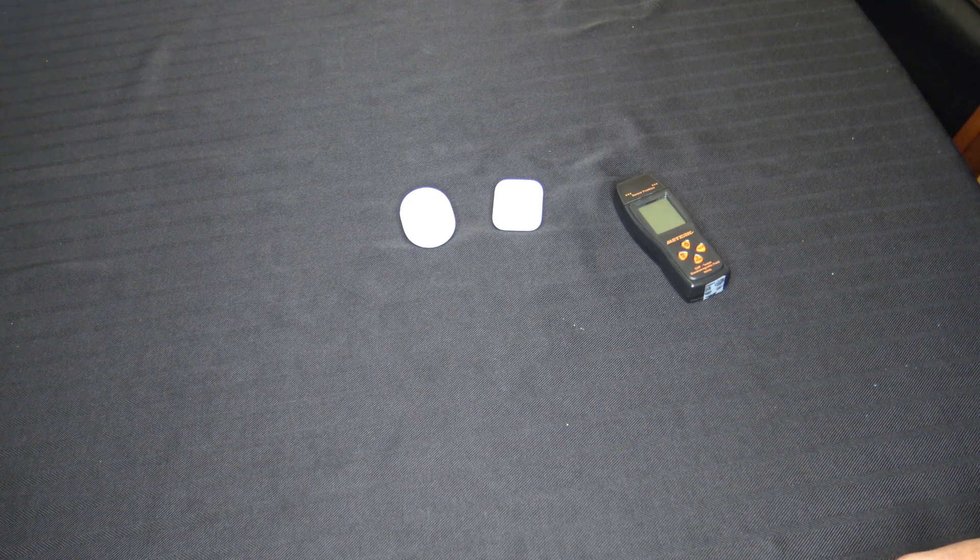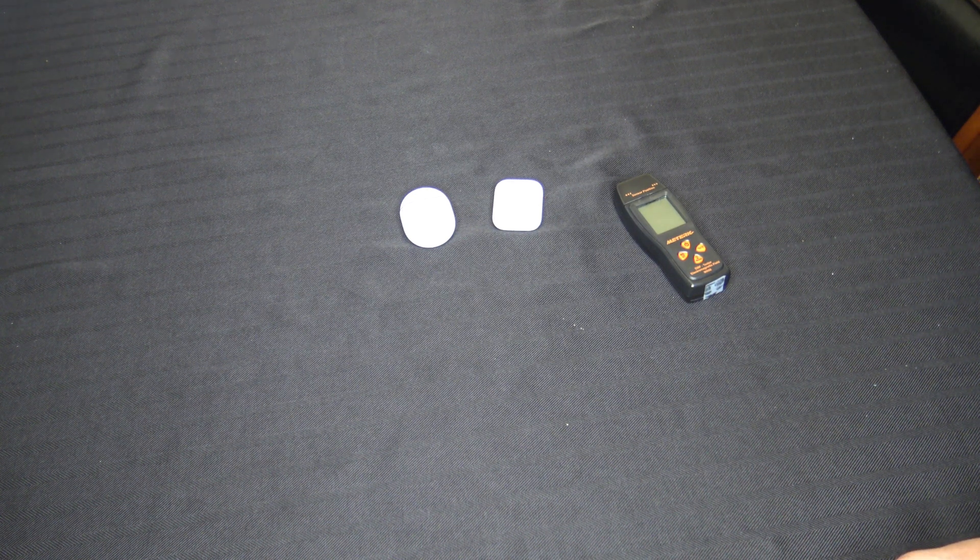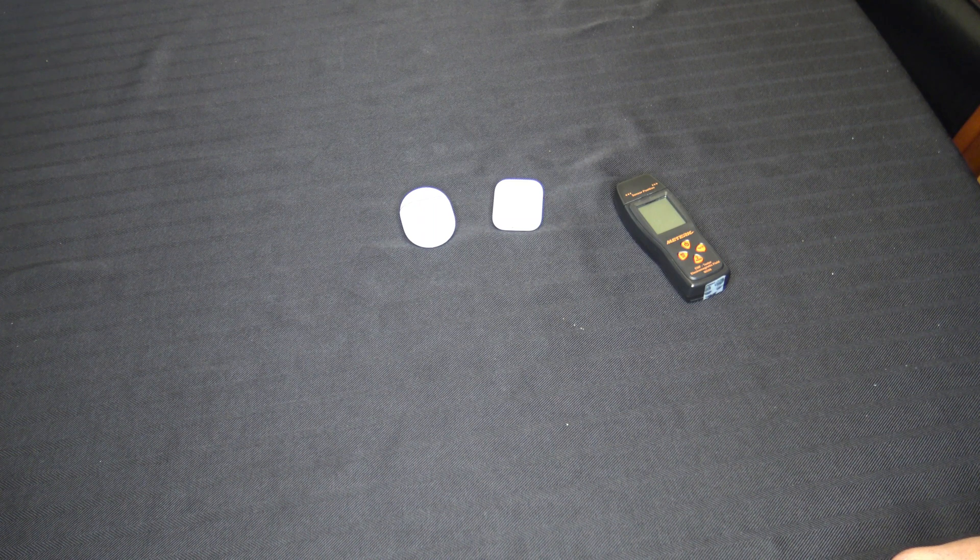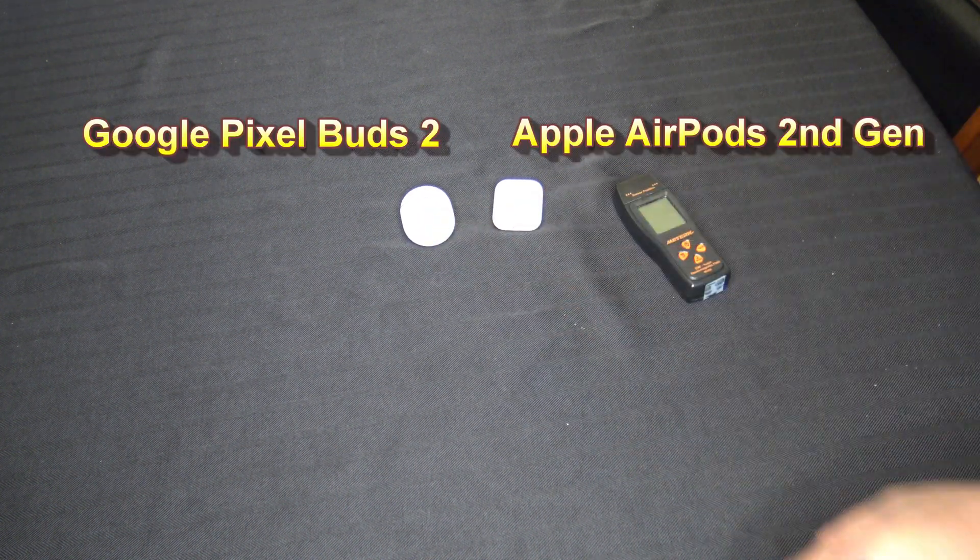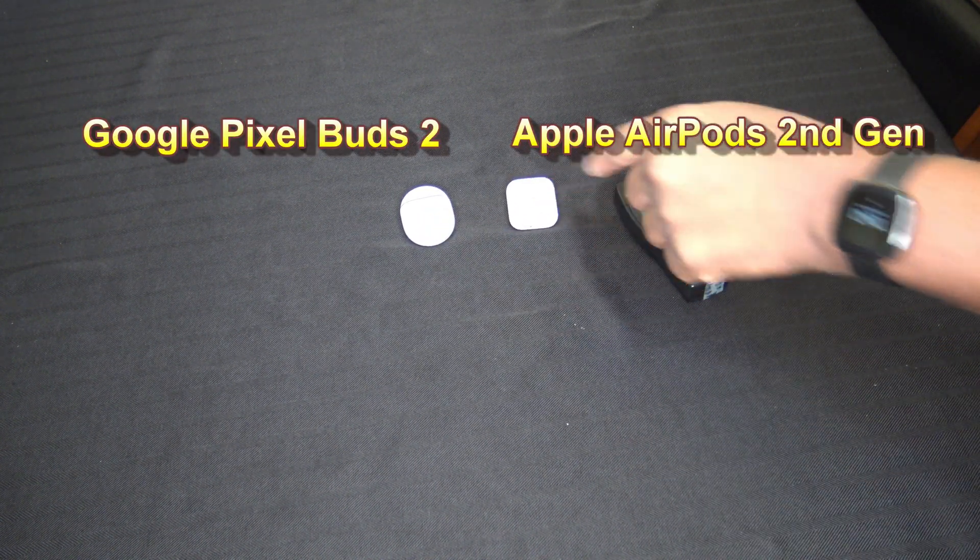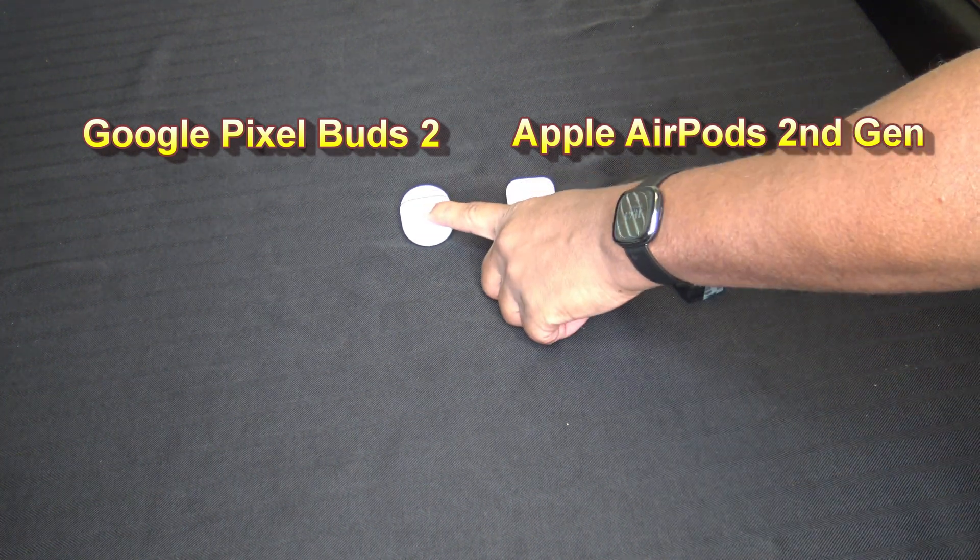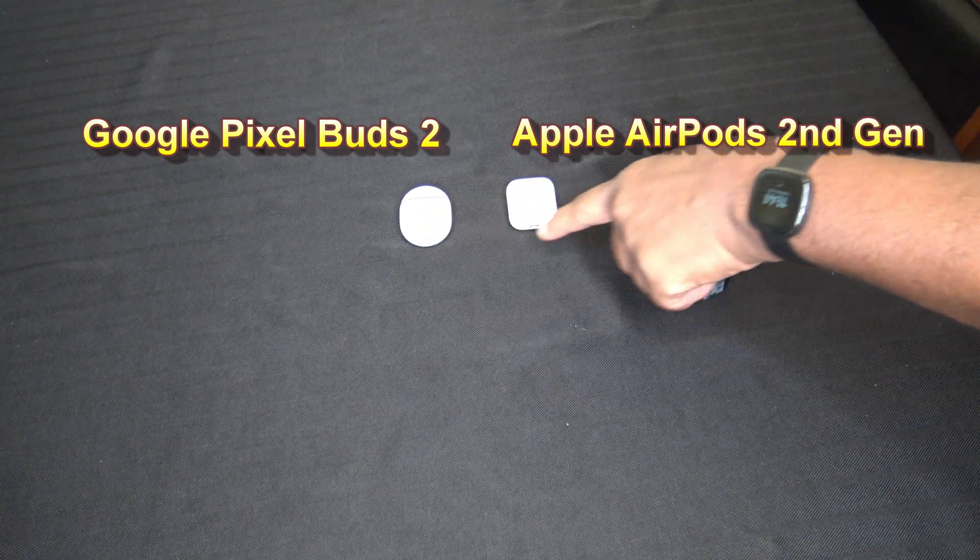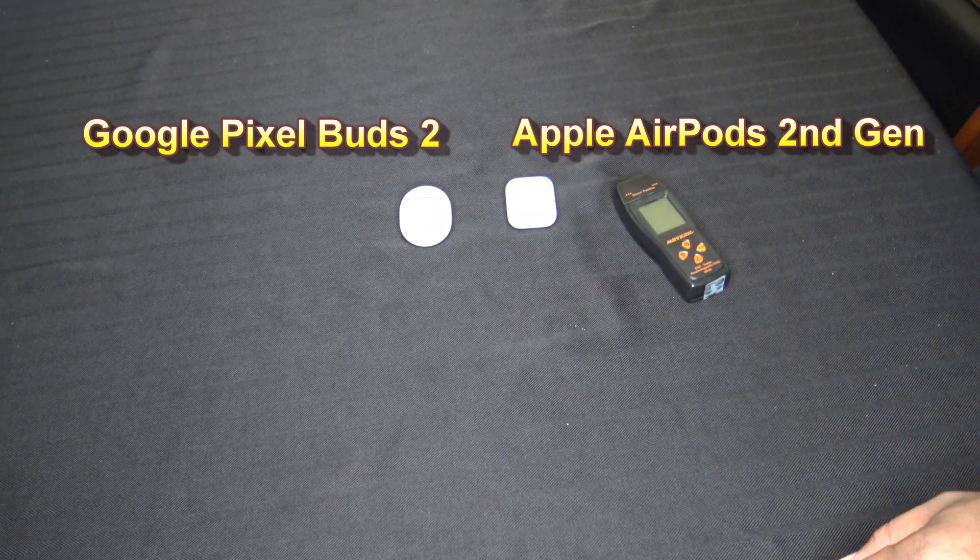Hey, it's Starnell here. Just wanted to show you something really quick with some Google Pixel Buds and some Apple AirPods. Now, the Google Pixel Buds have a charging case. The Apple AirPods do not. Now, this is an EMF reader to read EMF readings.